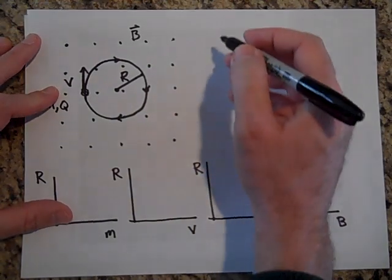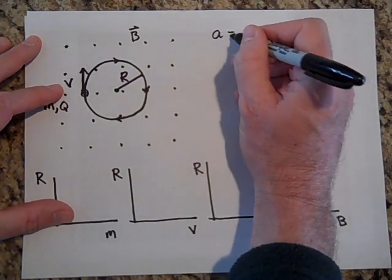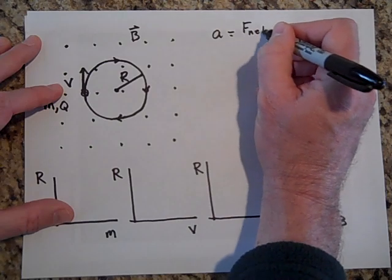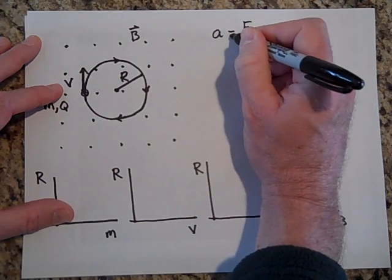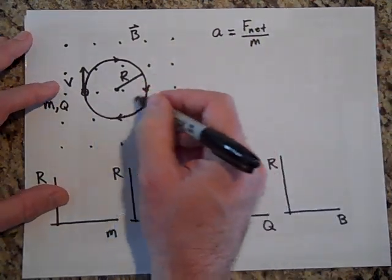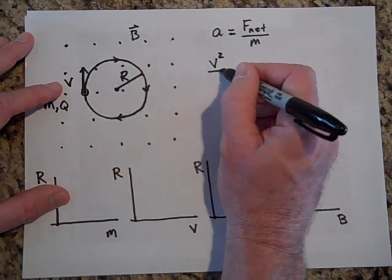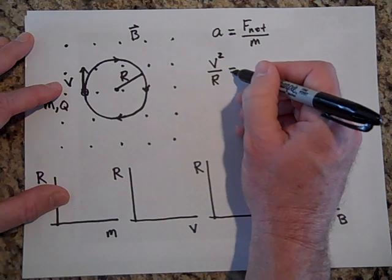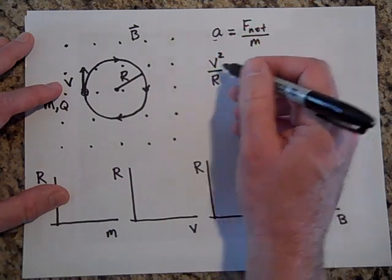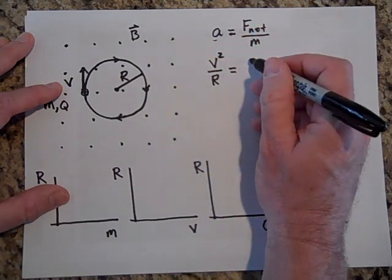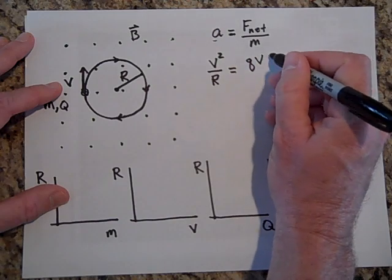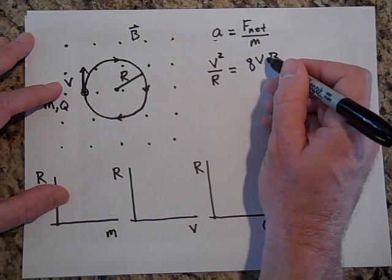Okay, so the way you do this is you say A equals F net over M. But since it's going in a circle with constant speed, we can say that A is V squared over R. It's toward the center of the circle. And so is the net force, and the net force is just QVB. It's QV cross B.